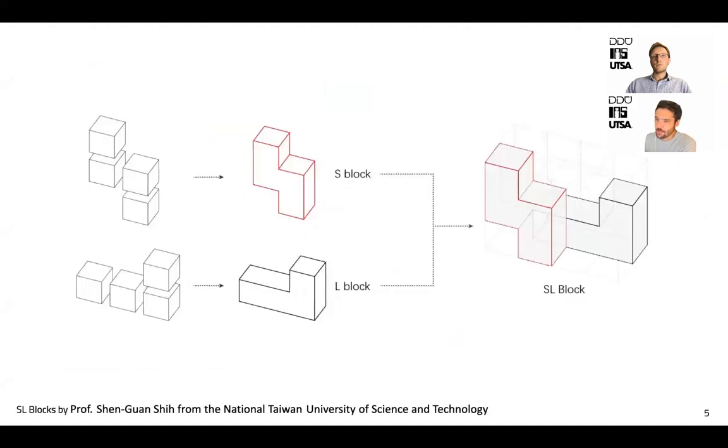One relatively new class of interlocking modules has been developed by Professor Shen Guan Shi from the National Taiwan University of Science and Technology. This combinatorial interlocking blocks consist of cubes, which are arranged in the form of an S and an L shape attached to each other, offering vast combinatorial possibilities.